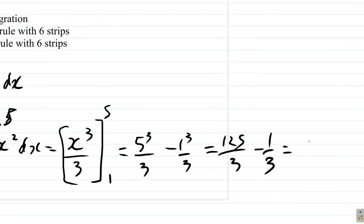That's going to be 125 over 3 minus 1 third, which is 125 minus 1 third. 125 minus 1 is 124 divided by 3.